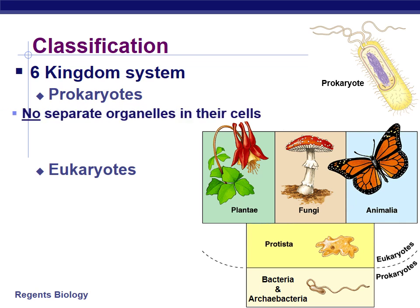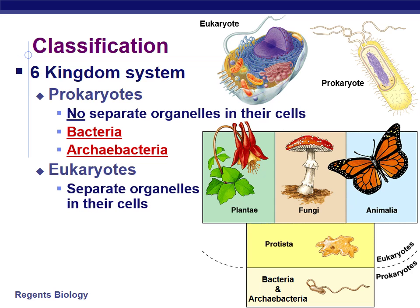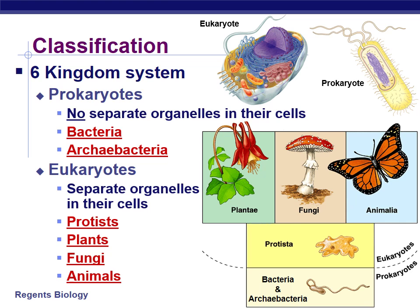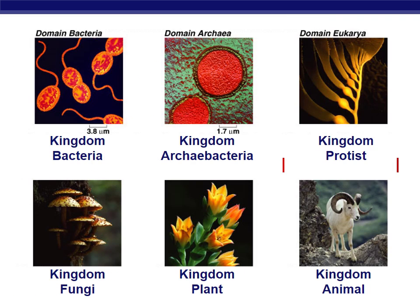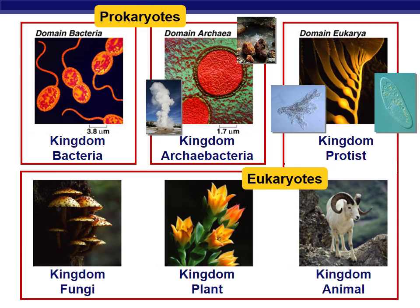Of the six kingdoms of life, two are prokaryotic: Bacteria and Archaea or Archaeabacteria. That leaves the other four being eukaryotes with a nucleus: Protists or Protista, Plants or Plantae, Fungi, and Animals or Animalia. In domain Bacteria you have only the kingdom Bacteria; in domain Archaea only the kingdom Archaeabacteria; and in domain Eukarya you have Protists, Animals, Plants, and Fungi.